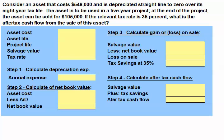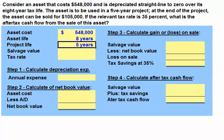Consider an asset that costs $548,000 and is depreciated straight-line to zero over its eight-year tax life. The asset is to be used in a five-year project. At the end of the project, the asset can be sold for $105,000. If the relevant tax rate is 35%, what is the after-tax cash flow from the sale of this asset?